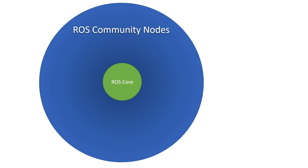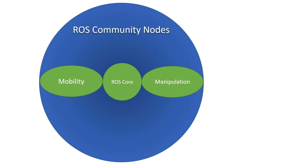We took a look at the ROS community and all of the nodes that are available, and we took a path through mobility and manipulation. Mobility is mobile platforms kind of like Misty; manipulation is robot arms. We know that there's a delta between what we've enabled and what the community needs in order to take a dependency on Windows. We're actively engaged with the community to find out what that delta is and help port those nodes.